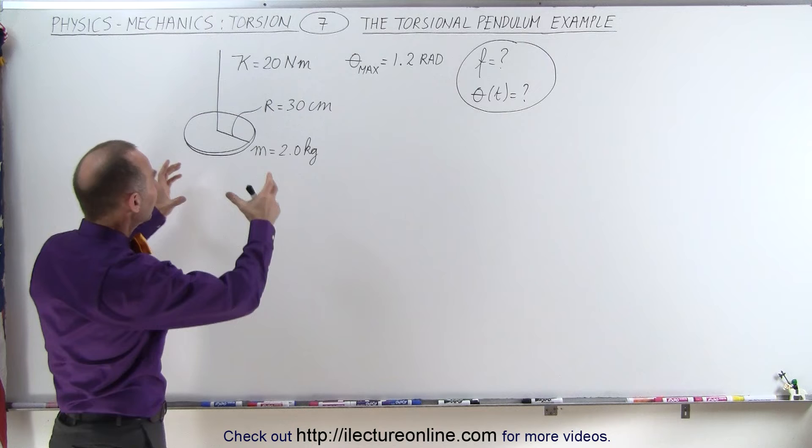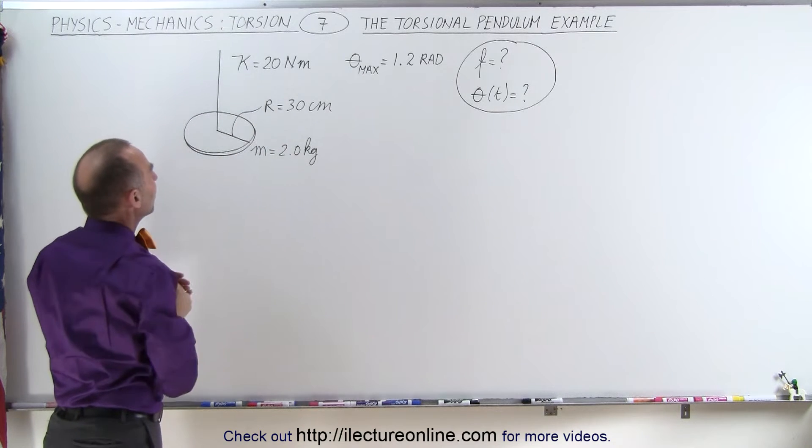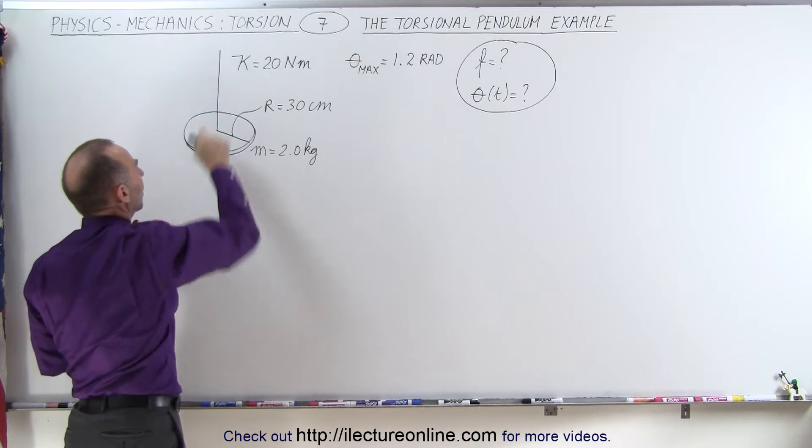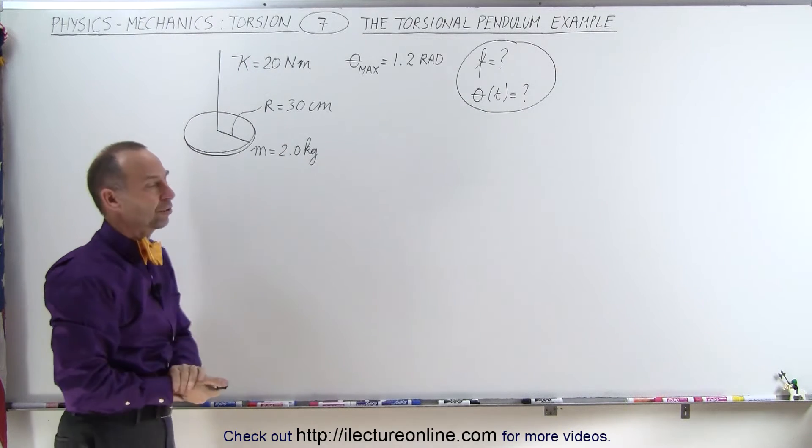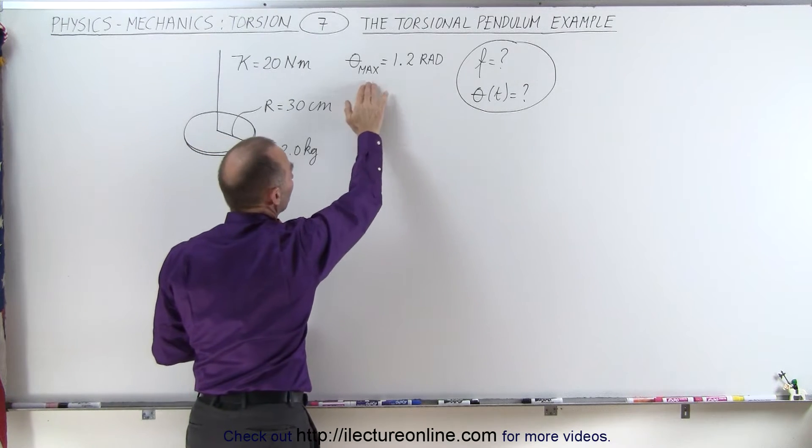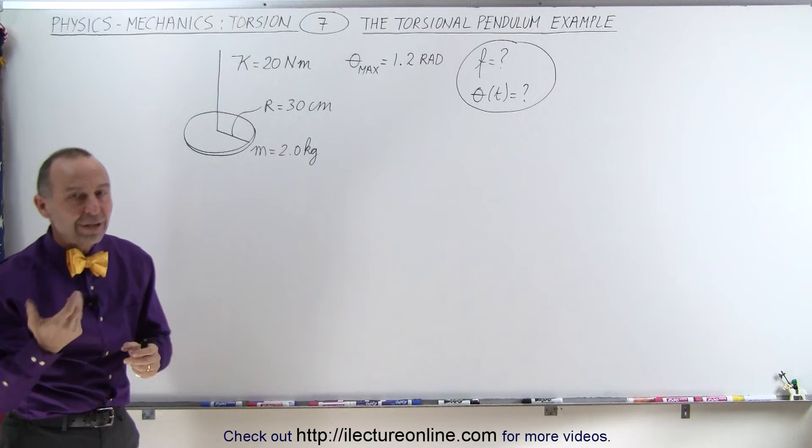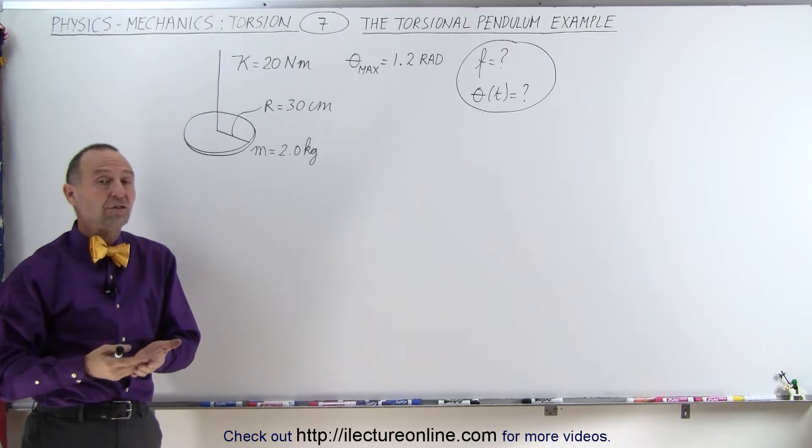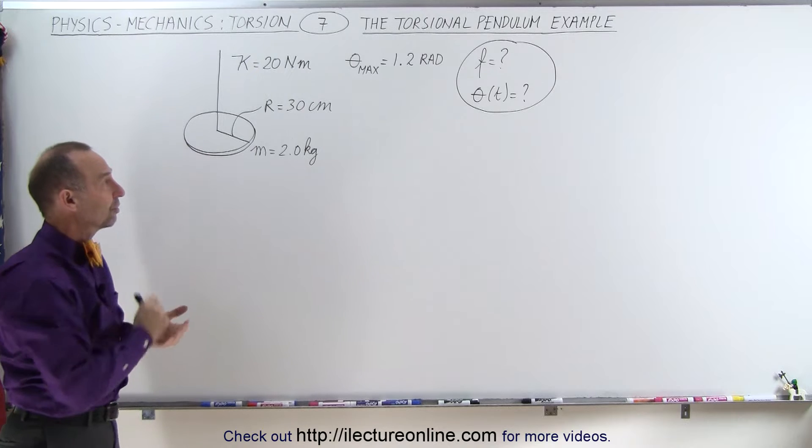Here we have a disc with a mass of 2 kg and a radius of 30 cm, which is suspended from a wire that has a torsional constant of 20 Nm. The maximum angular displacement is 1.2 radians. Find the frequency of oscillation and find the equation as a function of time for the position of the angle.